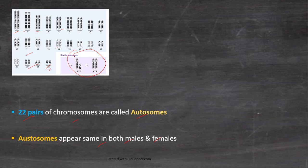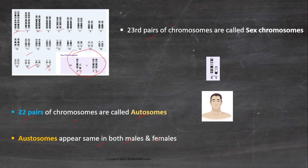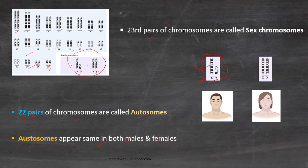The 23rd pair is called the sex chromosome. Sex chromosomes are different in males and females. In males, the 23rd pair of chromosomes is X and Y, as shown here, whereas in females the 23rd pair is X and X.